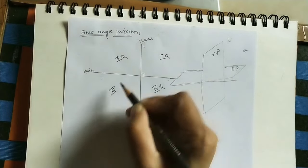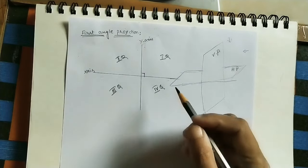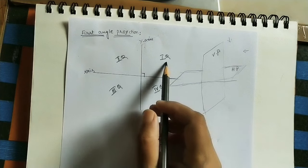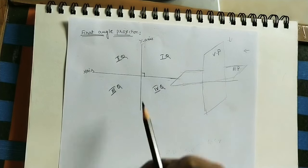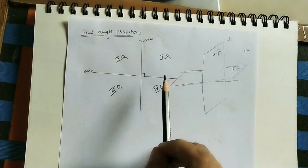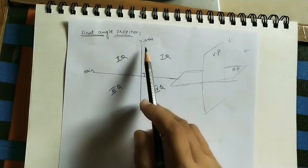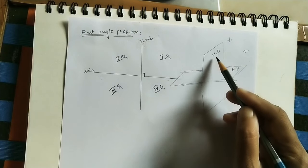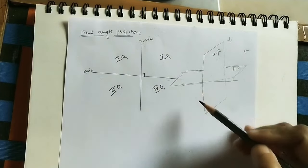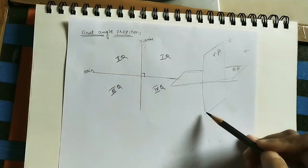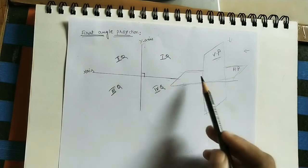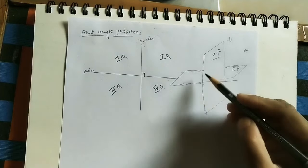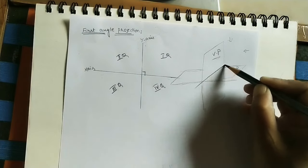So first quadrant, second quadrant, third quadrant, fourth quadrant — these two lines divide the space into four parts, which we can call quadrants or segments. Now, if you take these axes in 3D form, this is a vertical plane — in short form I am writing VP. Instead of a horizontal axis, in 3D form I am taking it as a plane, so this is the horizontal plane, HP. The line joining both the planes is called the reference line.